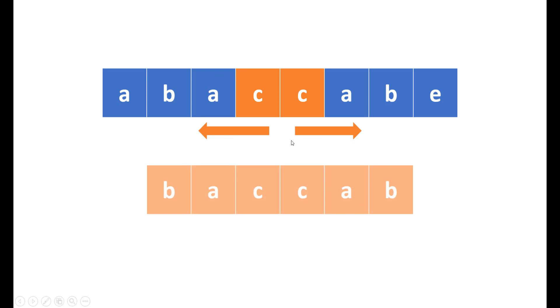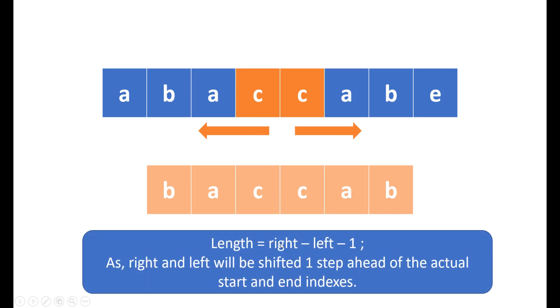So this would be the palindrome when you consider CC as a center and its length if you see is 6 which is an even length. So to find the length, the formula would be right minus left minus 1. Why so? Because you will be getting false once you are at A and E and so the indexes would be one step ahead and so you would need to subtract 1. So the answer would be right minus left minus 1. So this was all about the question and the intuition behind the answer.